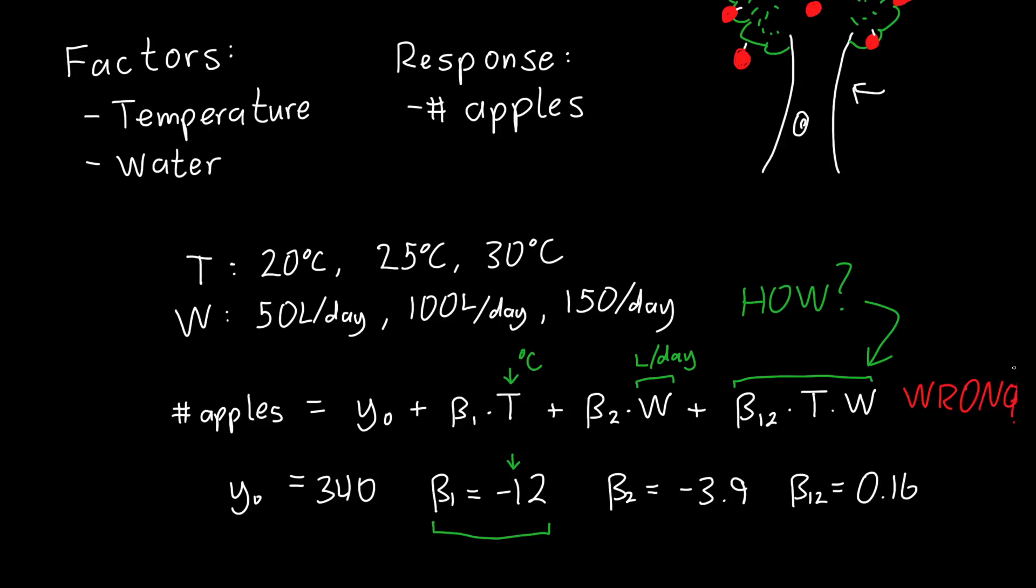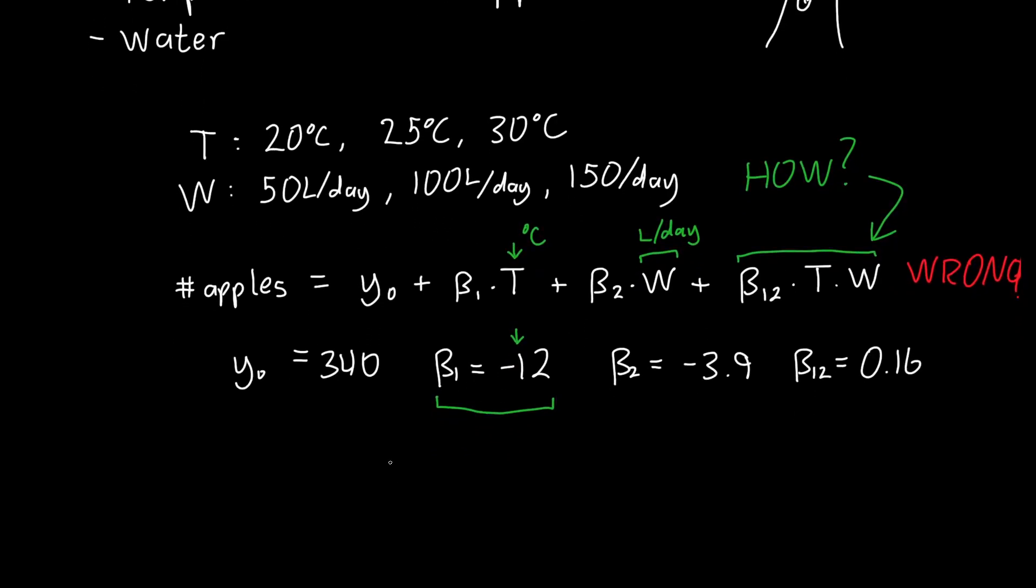They're both wrong. And so how do we fix this? Well, we fix this with experimental coding. So what I would like is for all of my variables to change by the same amount. So I'm going to create a new variable, I'll call it little t, which is equal to my actual temperature minus my average temperature divided by the temperature step. So in this case, that would be five degrees Celsius. I'm also going to define my water variable as the actual amount of water minus the average amount of water divided by my step in the water variable. So this would be 50 liters a day.